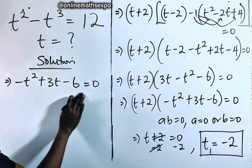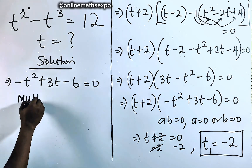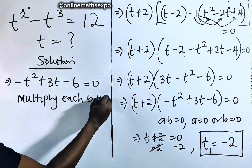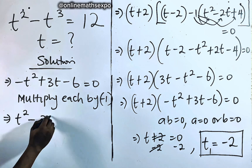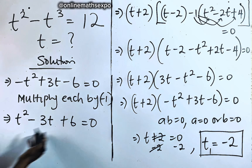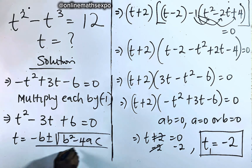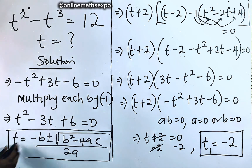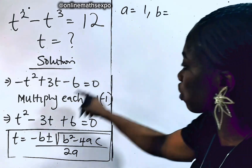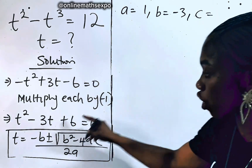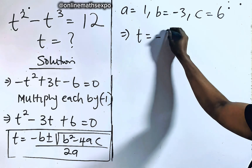For the second equation, negative t squared plus 3t minus 6 equals 0. Since we don't want to work with a negative leading coefficient, we multiply each term by negative 1, giving t squared minus 3t plus 6 equals 0. This is a quadratic equation. Here a equals 1, b equals negative 3, and c equals 6.